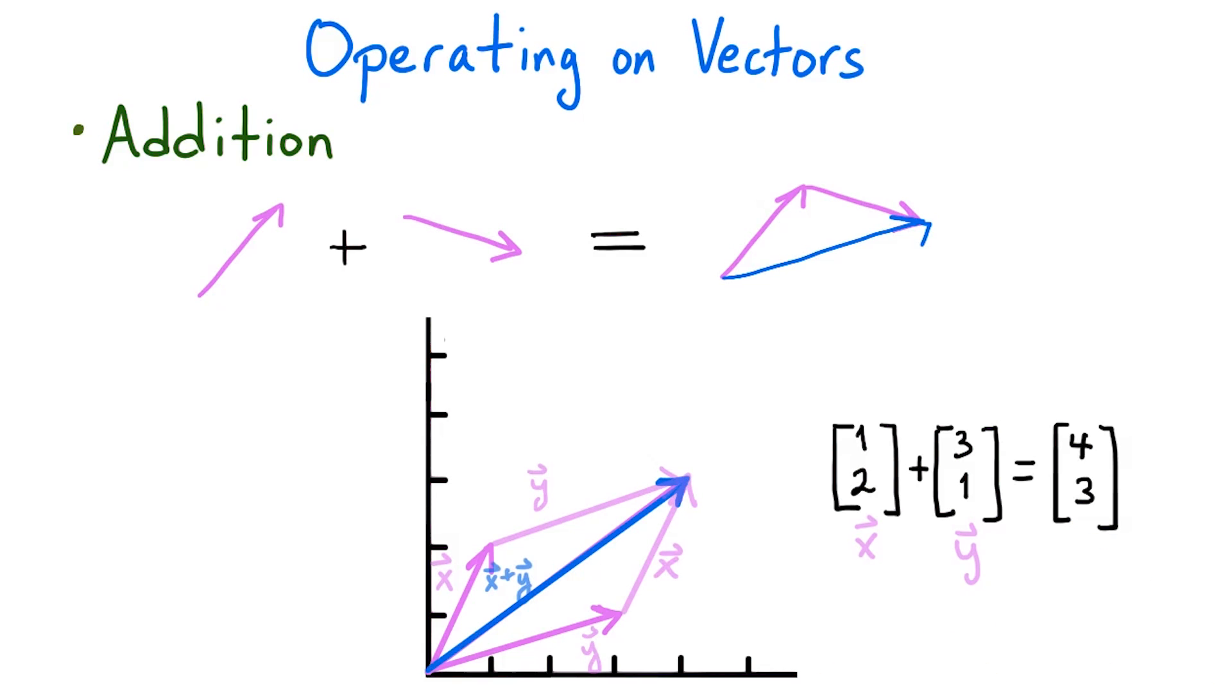Notice that if we lay out the vectors in a parallelogram shape, the sum vector connects the points where both chains of vectors start, in this case the origin, and where the chains both end.